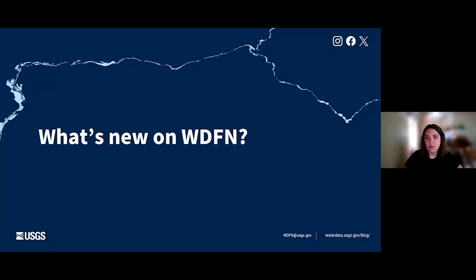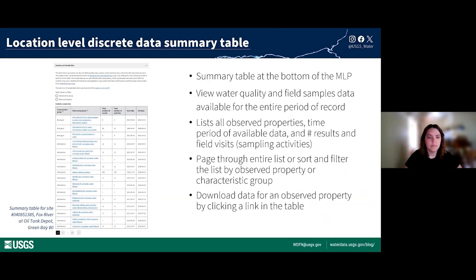What's new on WDFN? I'll share the new pages and features that will help you access discrete sample data. The first way to explore discrete sample data is on the monitoring location page. We've updated the summary of sample data table, available towards the bottom of the page. This table lets you see all water quality and field sample data collected at a location, including the time period of available data, how many sample results are available for download, and the number of field visits or sampling activities that have occurred. You can filter by observed property or characteristic group, and go directly to download data using the observed property link in each row.